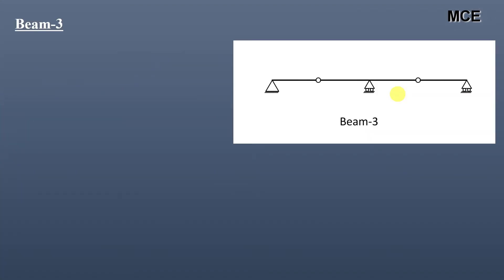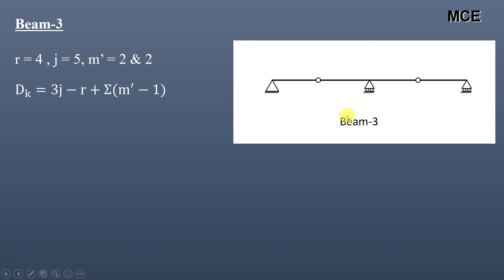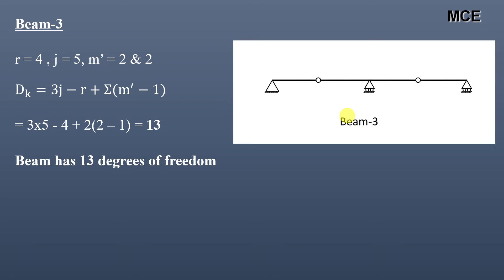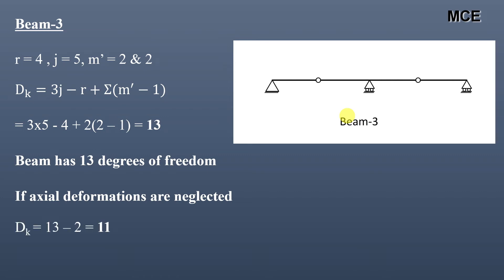For beam three, there are four reactions, five joints, and two internal hinges. The number of members meeting at both internal hinges is two each, so m′ = 2 and 2. The value of dk = 13, meaning the beam has 13 degrees of freedom. There are two members in the beam, so if axial deformations are neglected, dk = 13 − 2 = 11.